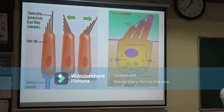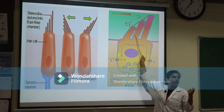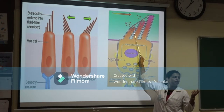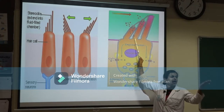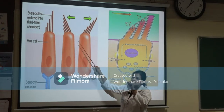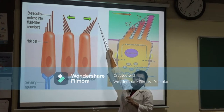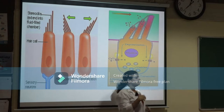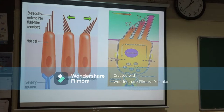Depolarization and afferent stimulation occur when stereocilia move toward the kinocilium. If the stereocilia move away from the kinocilium, the tip links are not stretched, potassium channels do not open, and hyperpolarization occurs — meaning there is no stimulation of the afferent nerve.